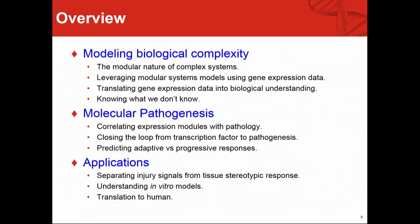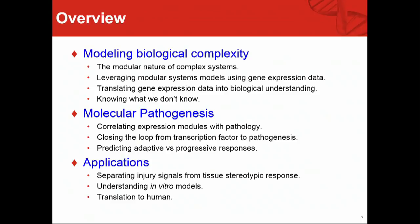Now I'm going to fly through some molecular pathogenesis slides. The real key is: can we take these modules and actually understand something about pathogenesis? What we've done is looked at a cluster correlation of different pathologies coded by level, because pathologies can occur uniquely or with other co-occurring pathologies. ALT may occur as only an ALT rise, or ALT plus degeneration and necrosis, or with biliary hyperplasia. Many discrete pathologies actually end up making a big smear at the bottom with lots of off-diagonal correlations, suggesting they don't look that different.